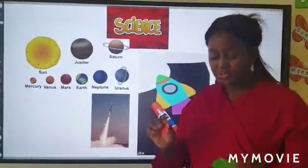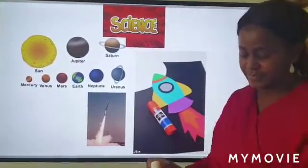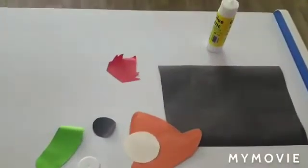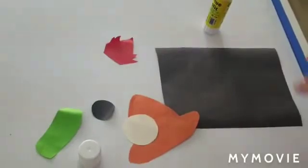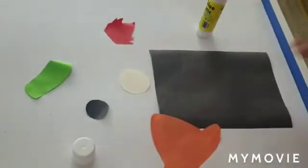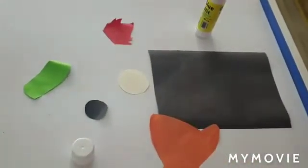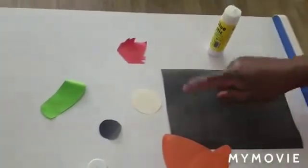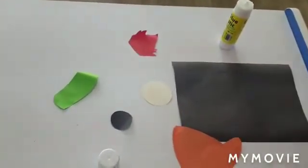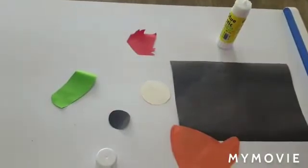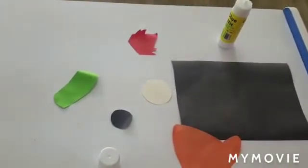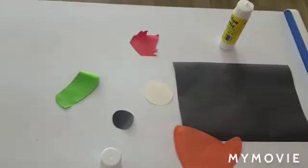Alright, I will start making my rocket. I want to prepare all the shapes that I need to make my rocket. And I have here my glue. You know this black paper — this black paper means that in space all is dark.